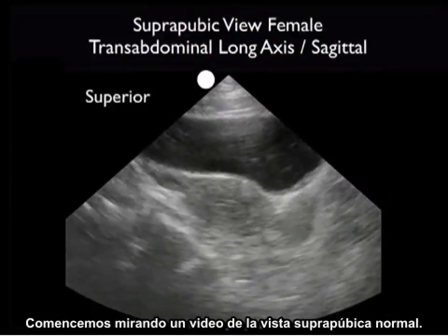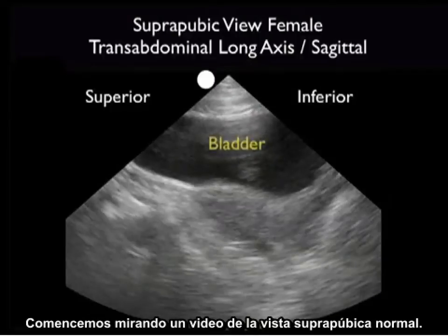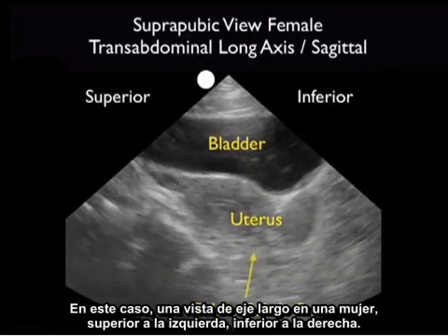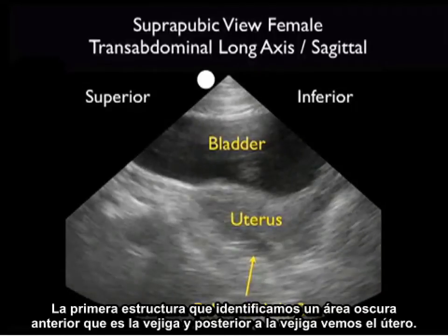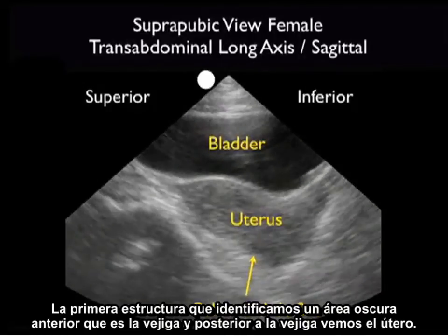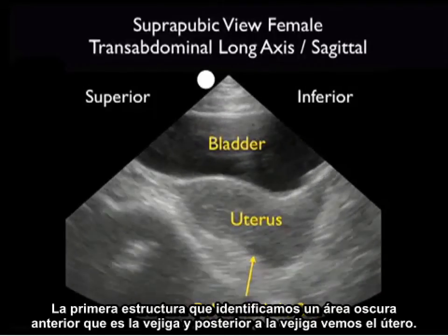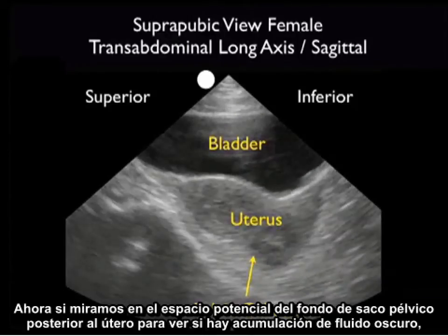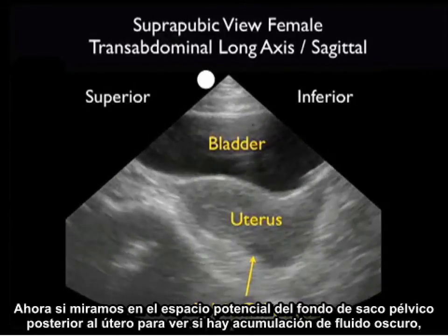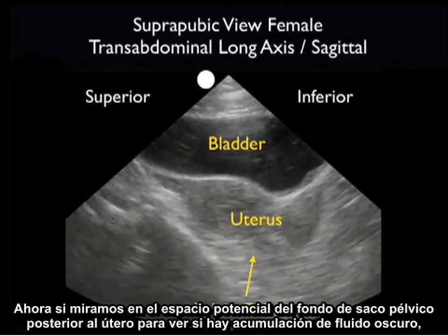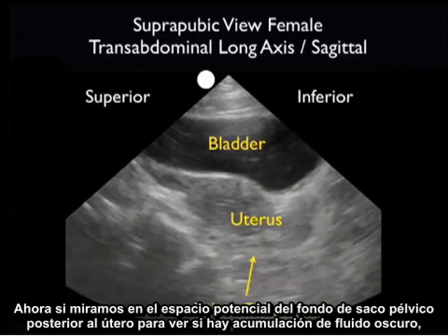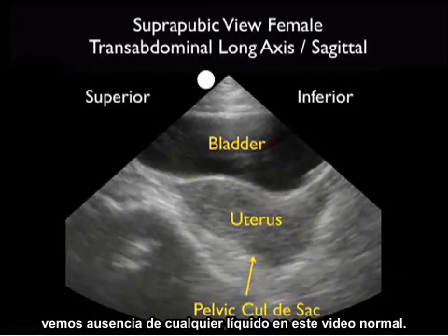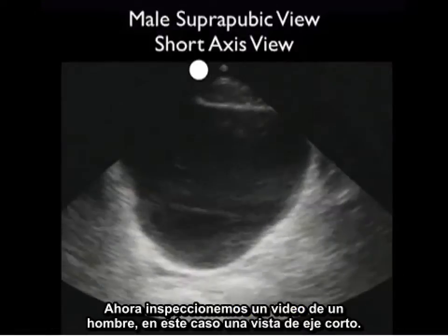Let's begin by looking at some normal video from the suprapubic view — in this case a long axis view in a female, superior to the left, inferior to the right. The first structure we identify is the bladder, the dark area anteriorly, and posterior to the bladder we see the uterus. Now if we look into the potential space, the pelvic cul-de-sac posterior to the uterus for any dark fluid collections, we see an absence of any fluid on this normal video clip.